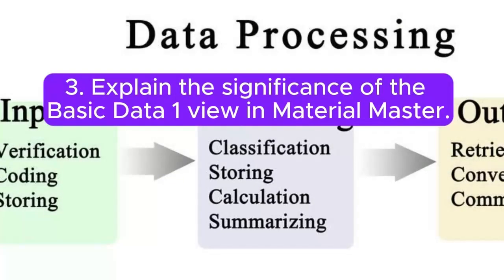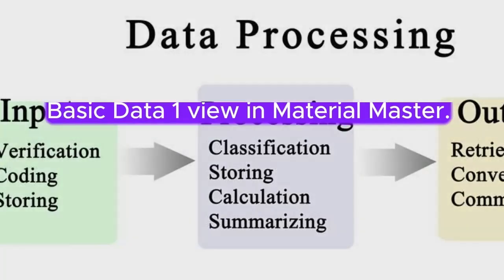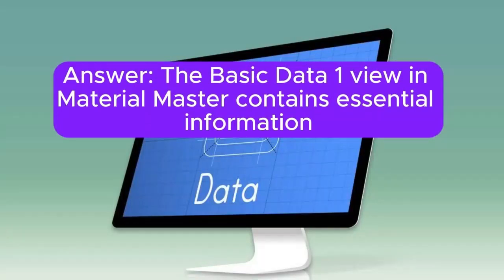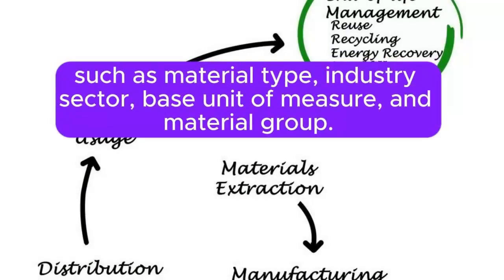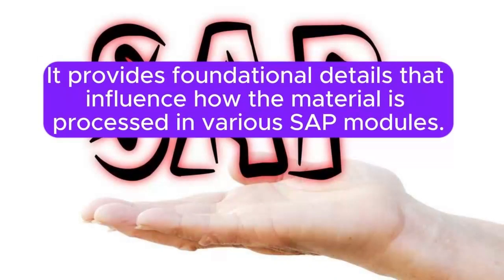Question 3: Explain the significance of the Basic Data 1 view in Material Master. The Basic Data 1 view contains essential information such as material type, industry sector, base unit of measure, and material group. It provides foundational details that influence how the material is processed in various SAP modules.